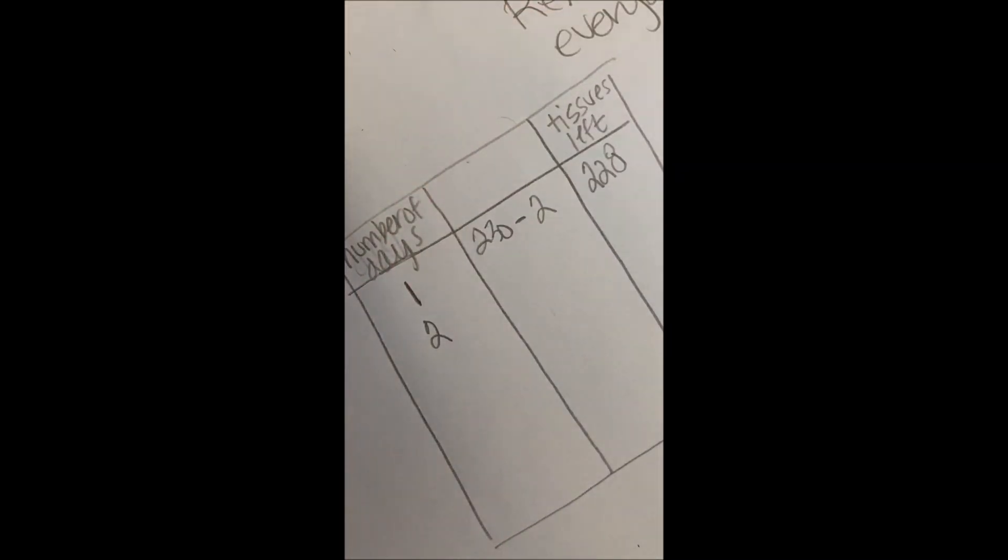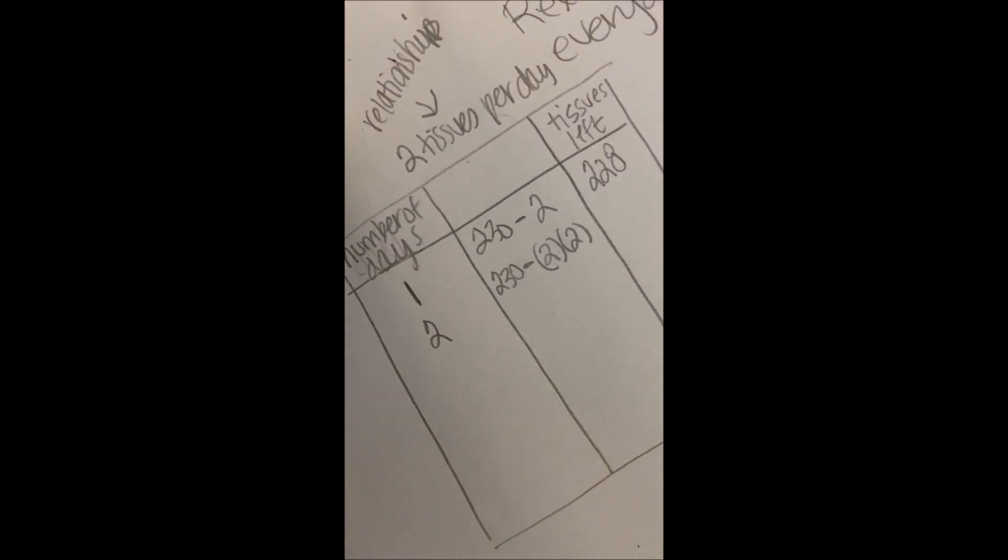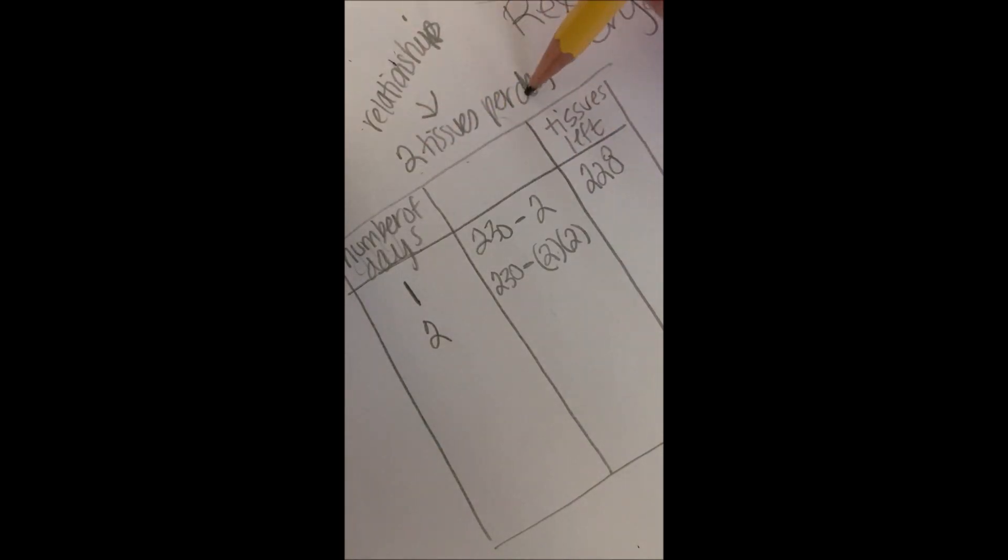But what about two days? So we have the 230 total tissues. And now that it's two days, I have two tissues per day. I'm going to write that up here. Two tissues per day. This is our relationship. Two tissues per day.